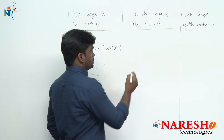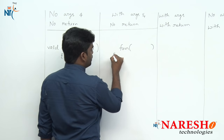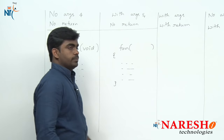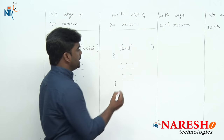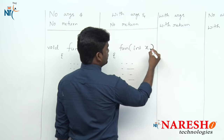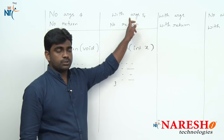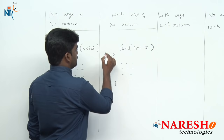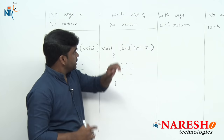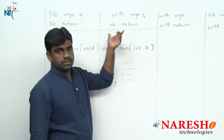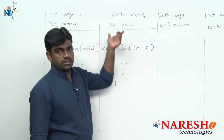The second classification is with arguments and no return values. The function takes arguments — integers, float, double, character, strings — all these are input types. Simply passing one integer, we declare a variable to collect it; that is called arguments. The function takes arguments, processes the input with predefined logic, but it is not returning anything — output is void. That is the second classification.